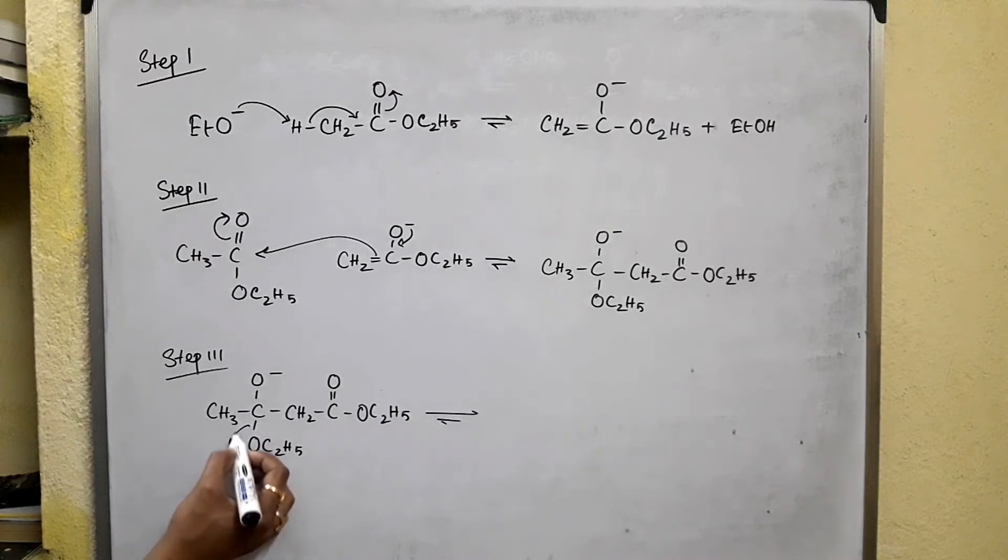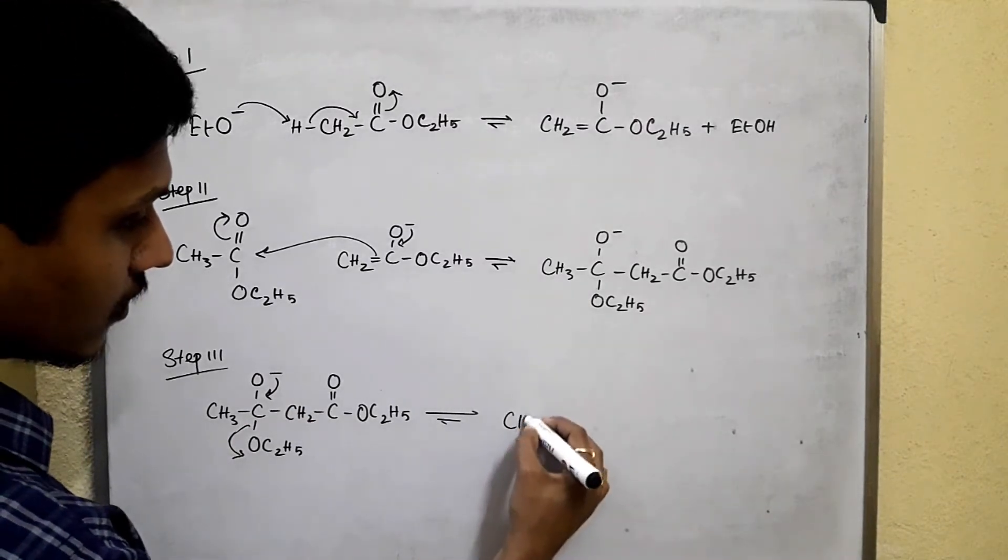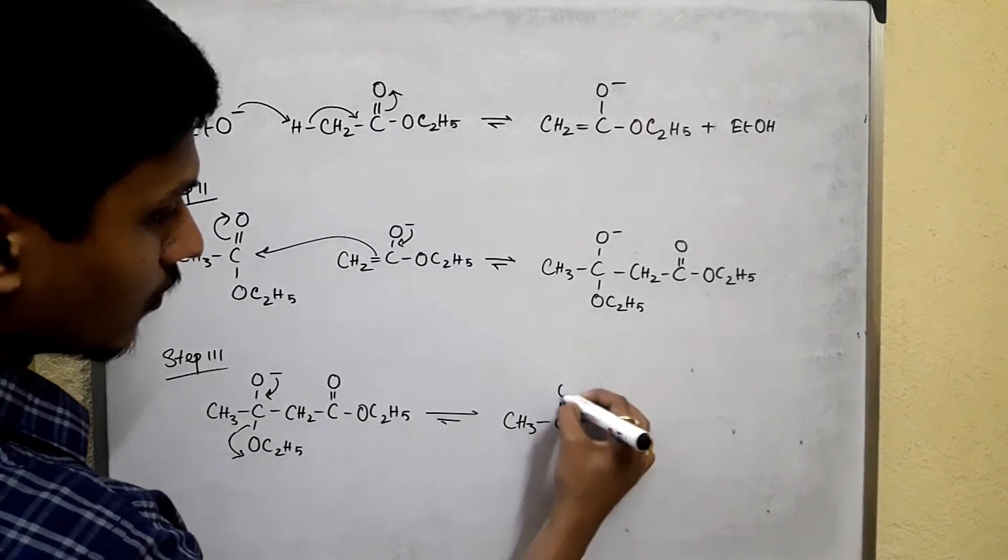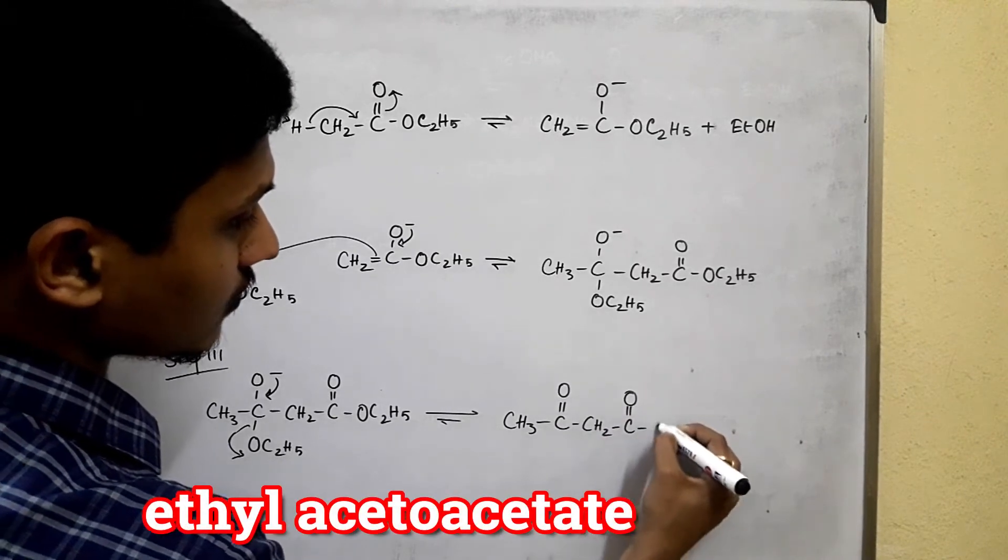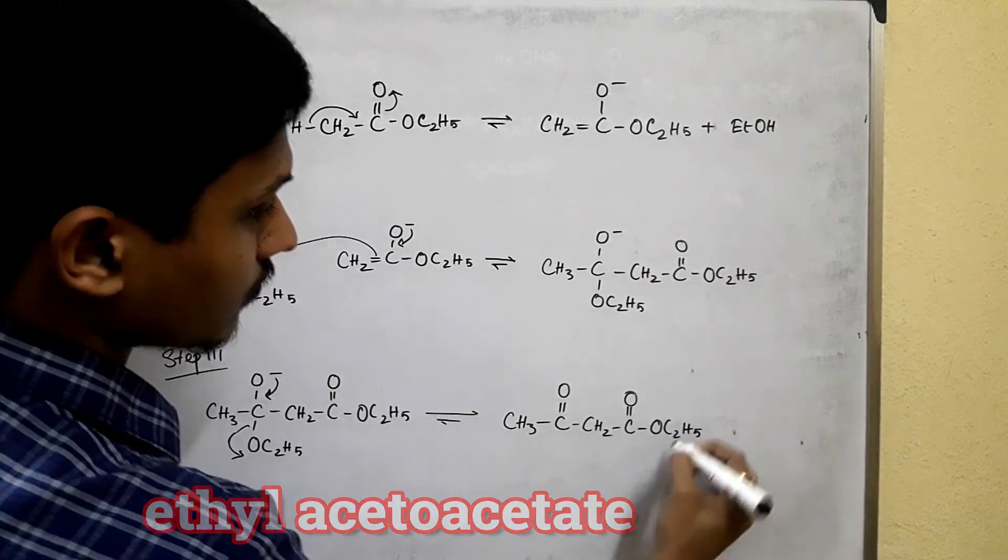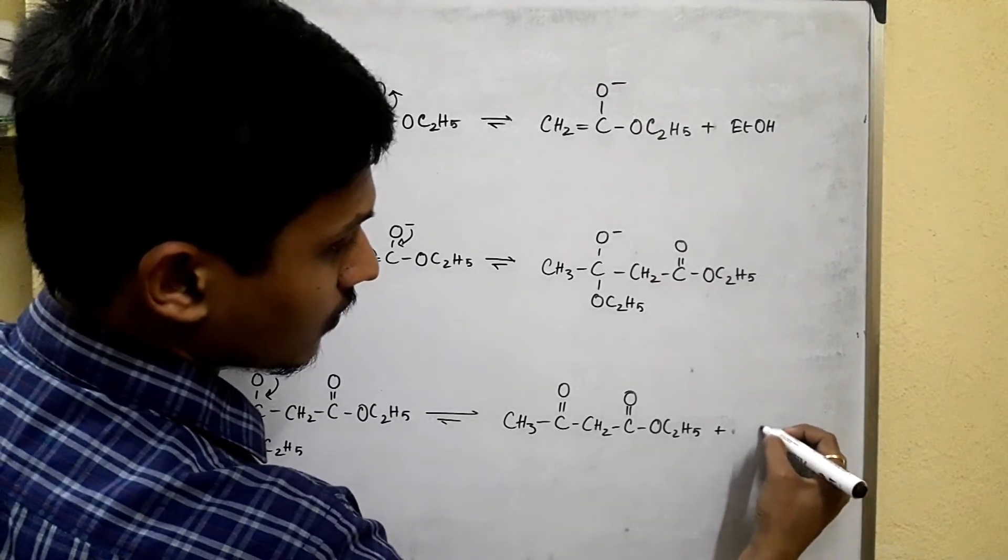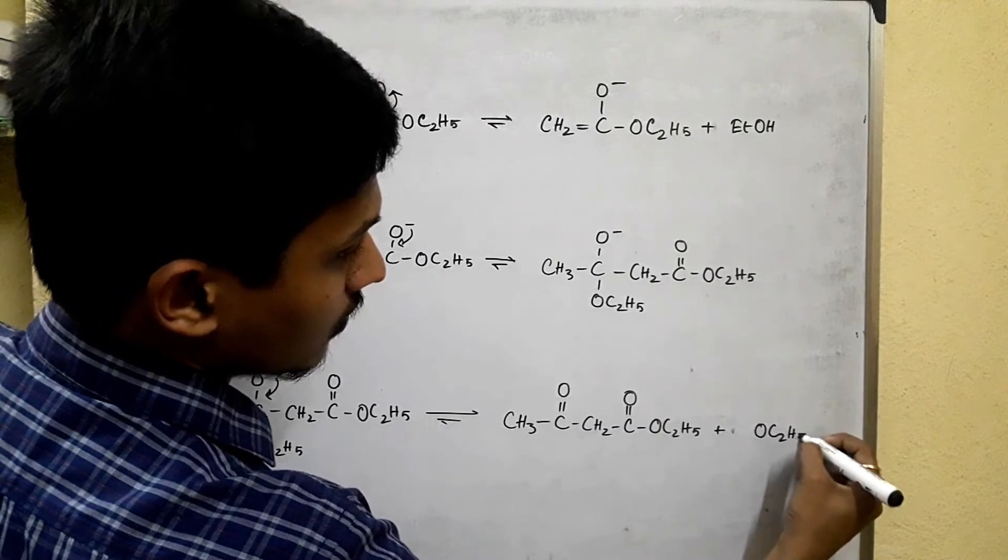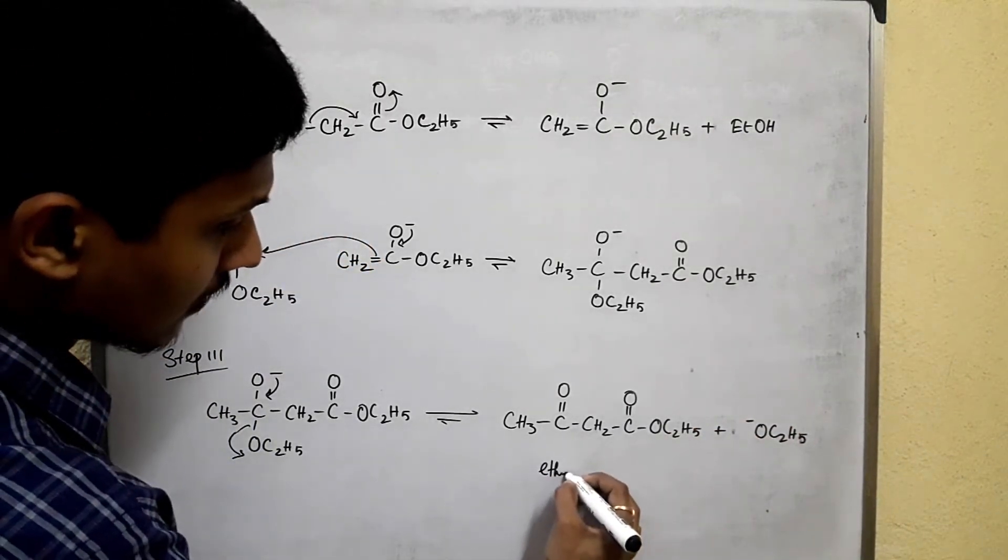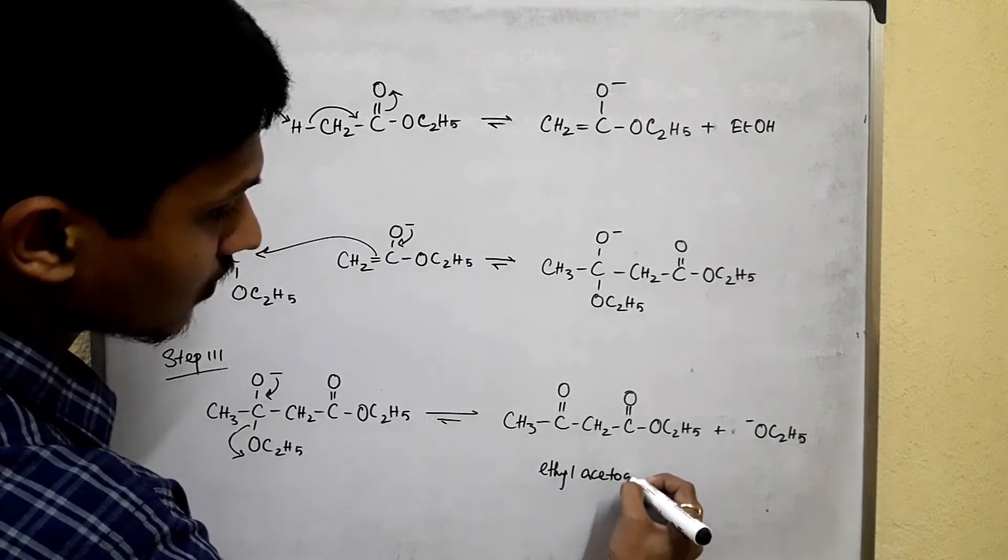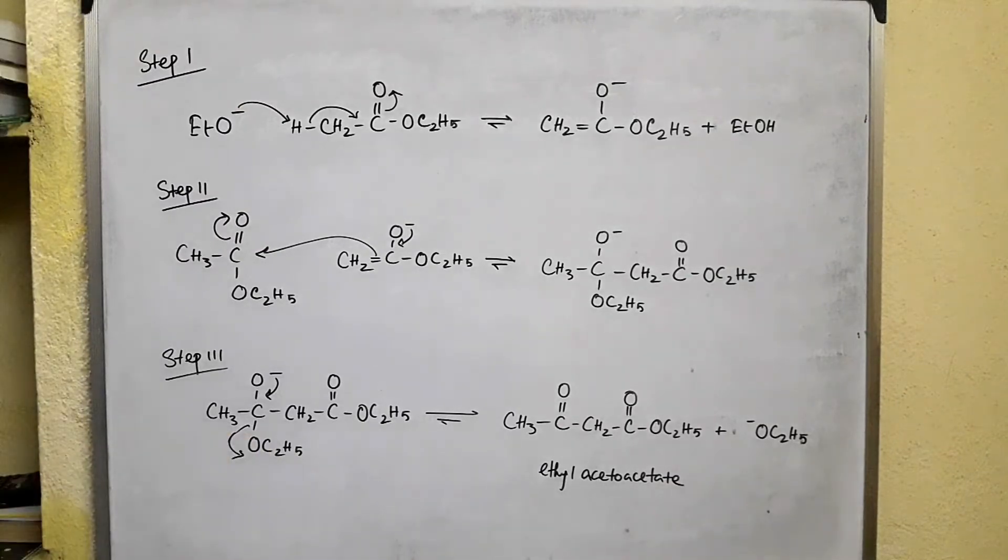This leaving group leaves and this negative charge drops and we get our product known as ethyl acetoacetate plus the leaving group which is the ethoxide ion. And this is ethyl acetoacetate or beta-ketoester.